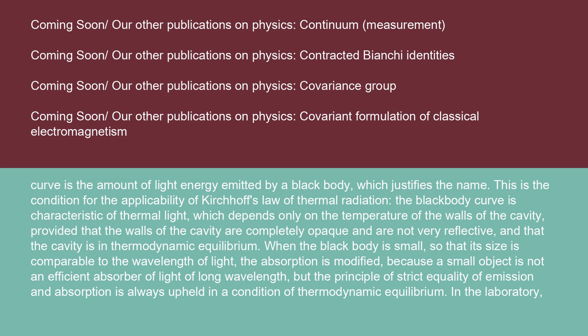This is the condition for the applicability of Kirchhoff's law of thermal radiation. The black body curve is characteristic of thermal light, which depends only on the temperature of the walls of the cavity, provided that the walls are completely opaque and not very reflective, and that the cavity is in thermodynamic equilibrium. When the black body is small, so that its size is comparable to the wavelength of light, the absorption is modified, because a small object is not an efficient absorber of light of long wavelength.